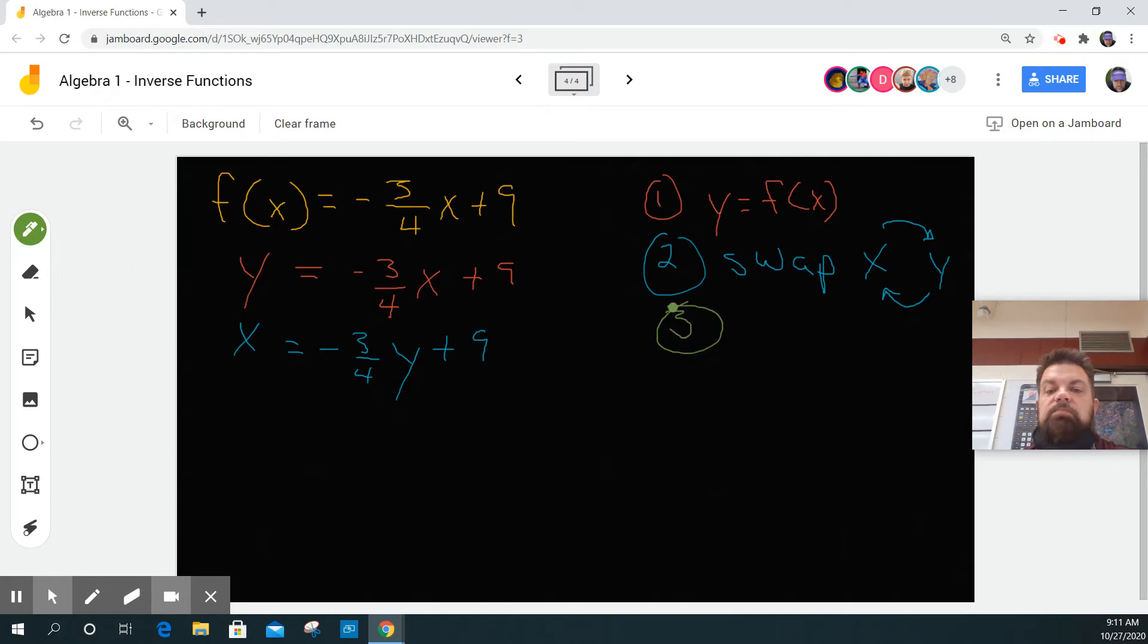Next step, we solve for y. So I'm going to minus 9 from both sides, and I get x minus 9 is equal to negative three over four y.